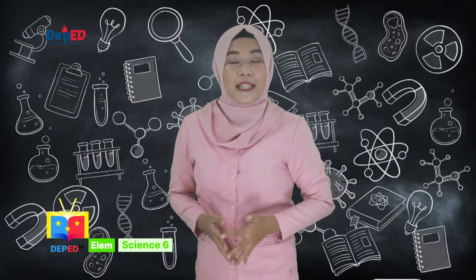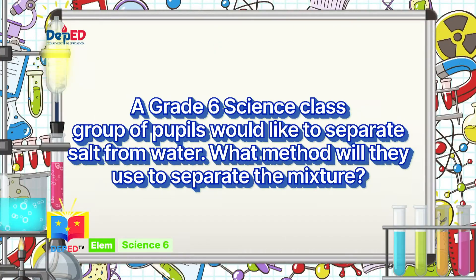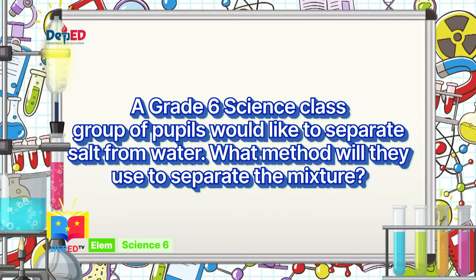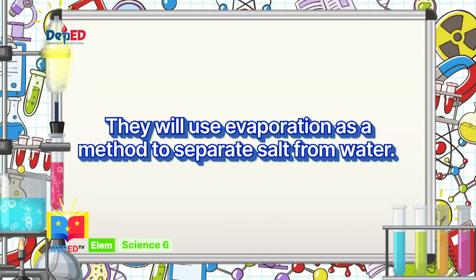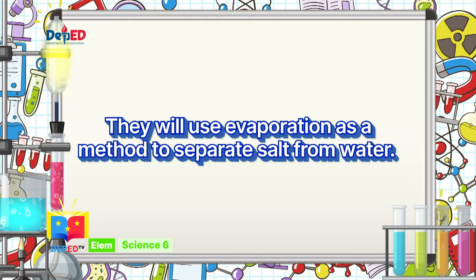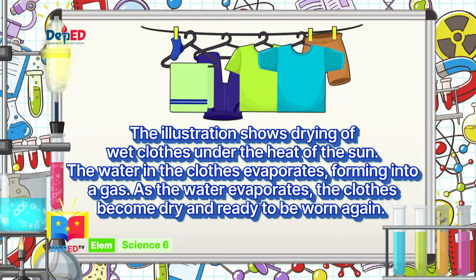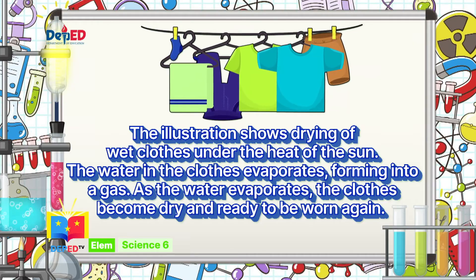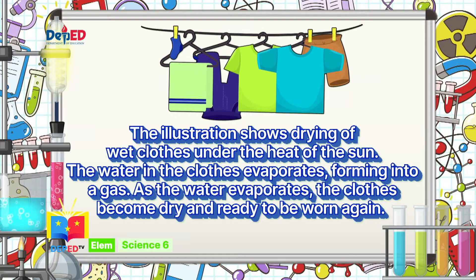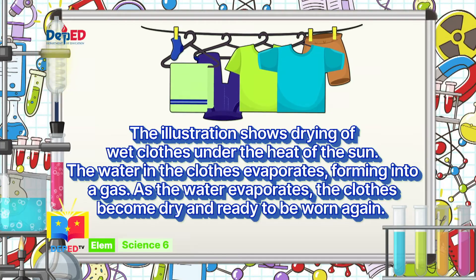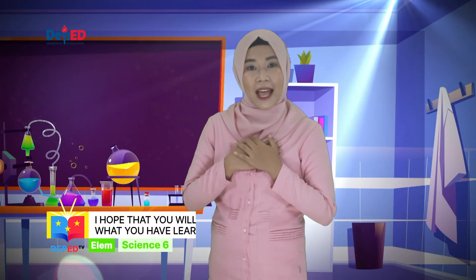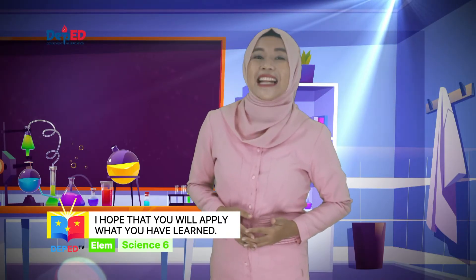In your paper, write a short explanation on the following situations. Number 1: A grade 6 science class group of pupils would like to separate salt from water. What method will they use? They will use evaporation as a method to separate the salt from water. Number 2: In the illustration, explain a few sentences about the method of separating mixtures and give its benefit. The illustration shows drying of wet clothes under the heat of the sun. The water in the clothes evaporates, forming into gas. As the water evaporates, the clothes become dry and ready to be worn again.